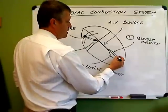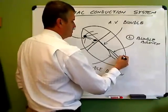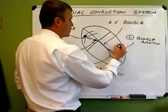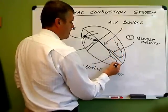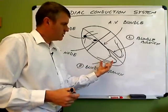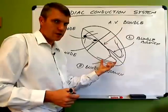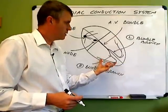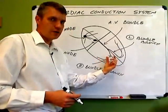And then finally, these fibers branch further and further down to what are called Purkinje fibers and the Purkinje fibers deliver that signal to the deep parts of the ventricular myocardium. And then we get ventricular contraction.